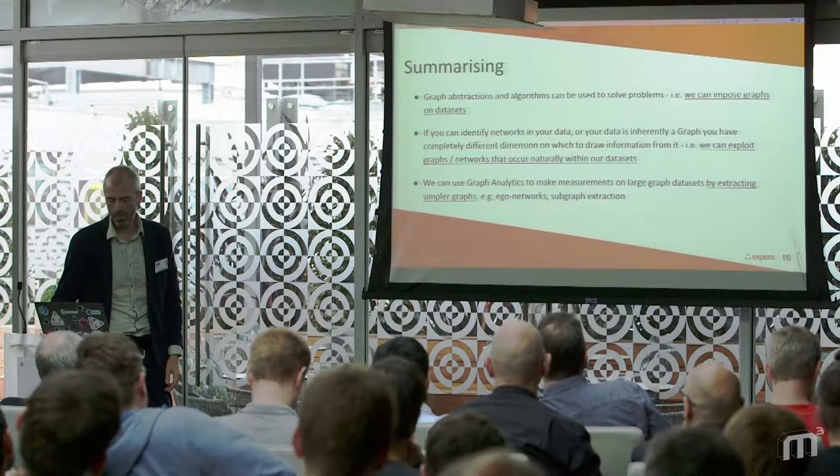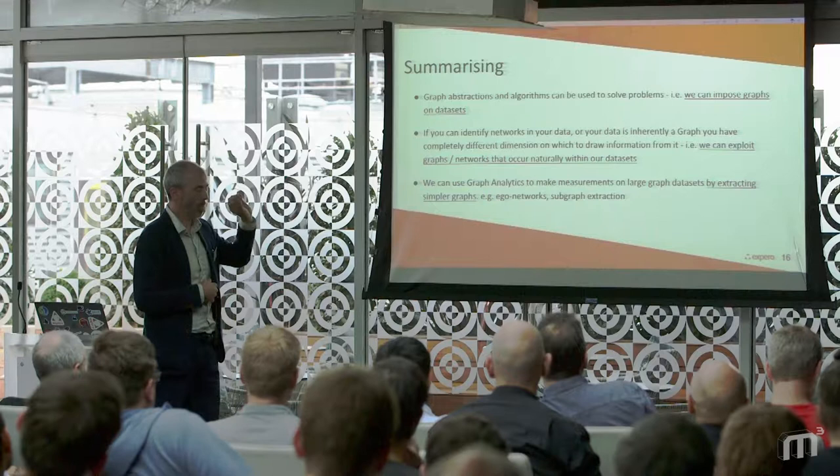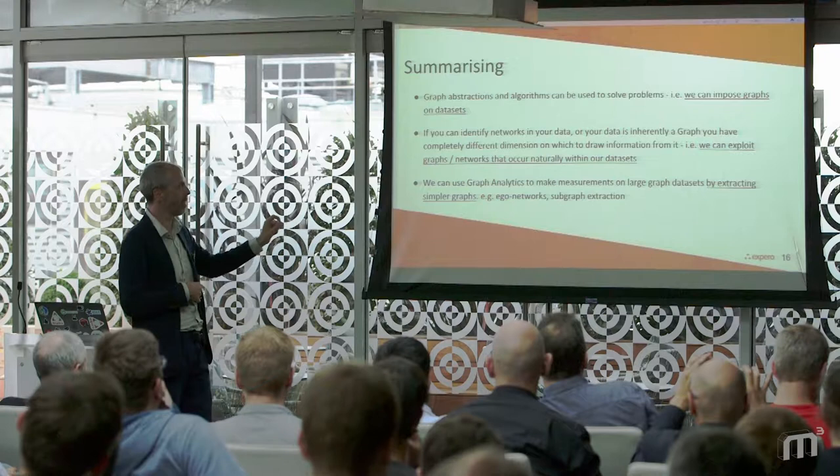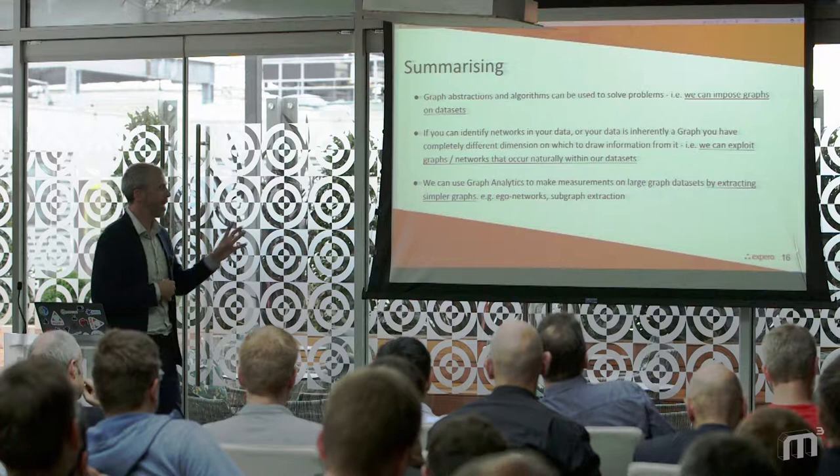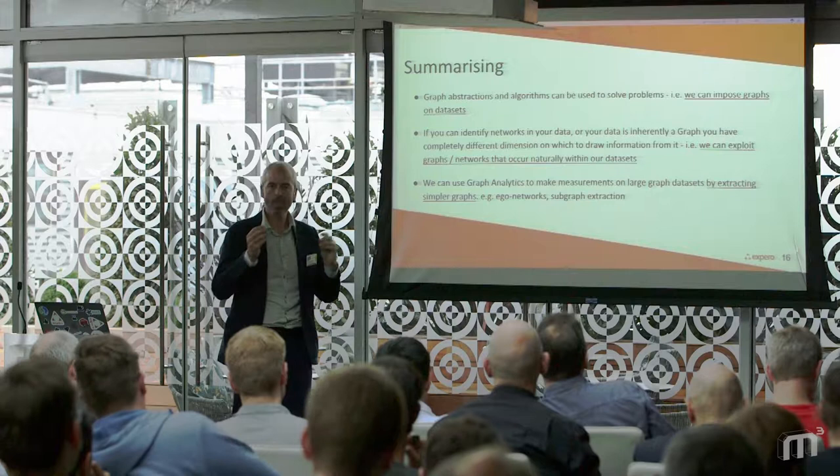To summarize: graph abstractions and algorithms can be used to solve problems, and we can impose graphs on any data we might have even if it's not naturally a graph. If we've got data that is a graph, we should be exploiting it because we have rich relational data we can pull out into our analysis. But in general, graph analytics — in order to use them on large data sets — we have to extract simpler graphs that graph theory can handle.